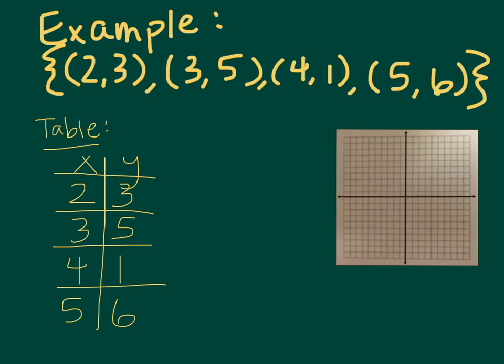And then our graph is what we're going to do is we're just going to graph them. So we're going to start at our origin. And the first one, 2, 3, we're going to go to the right 2 and up 3. And we're going to put a point there at 2, 3.